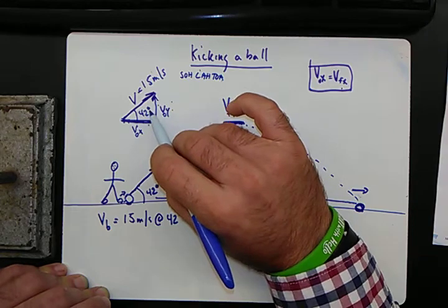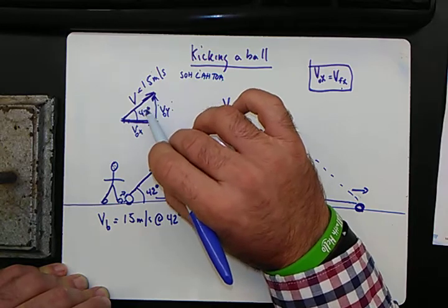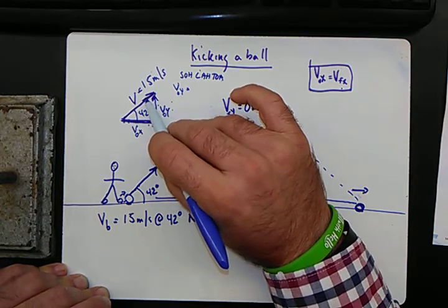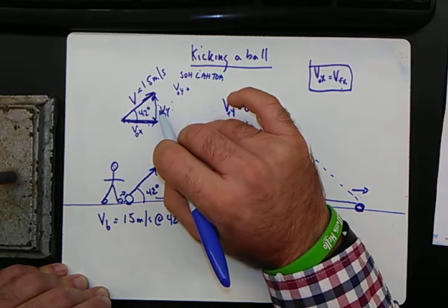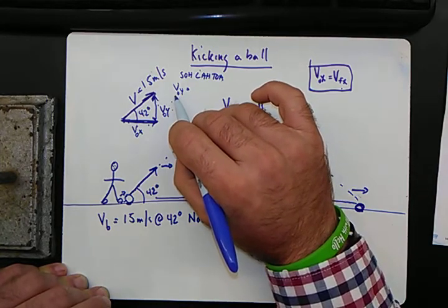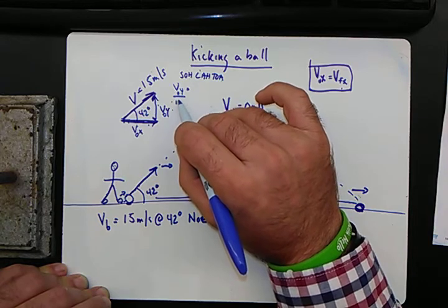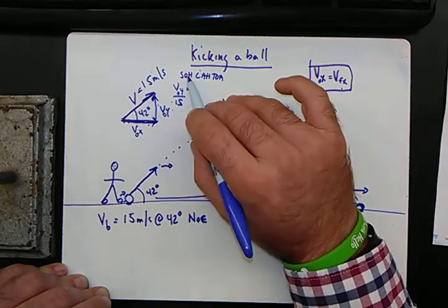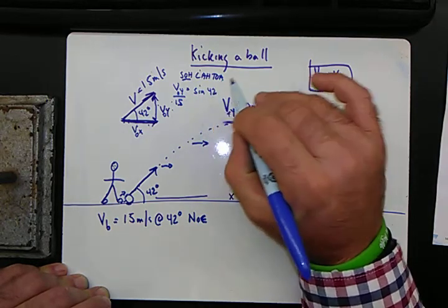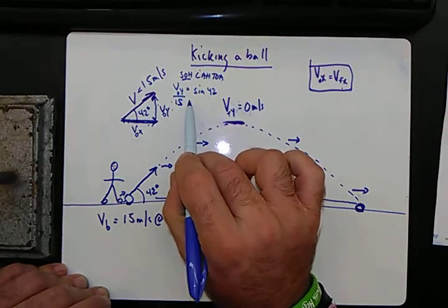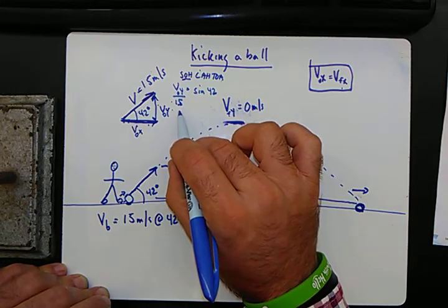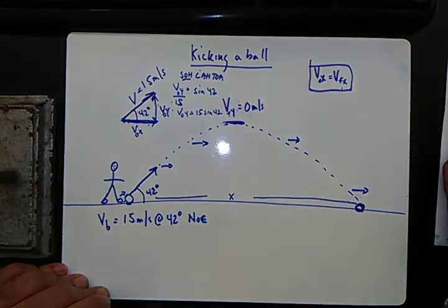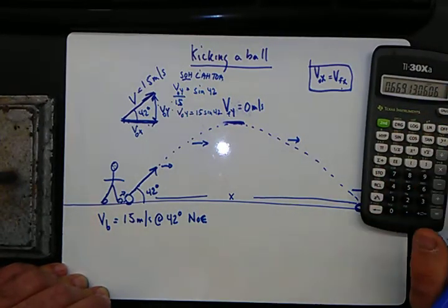We know that we've got this one, this is our hypotenuse. Opposite, let's find y first, Vy. Opposite over hypotenuse. So Vy over the hypotenuse of 15, we'll leave the units off, equals opposite over hypotenuse, sine 42. I reverse that a little bit, but that's OK. So in moving this over here, we do a little bit of algebra. V naught y equals 15 sine 42. So let's figure what that is. 42 sine times 15.